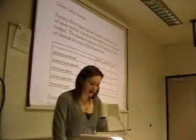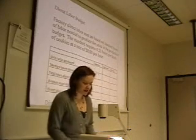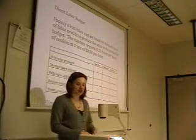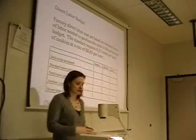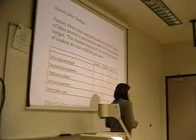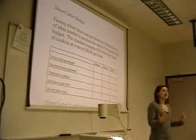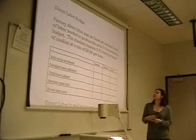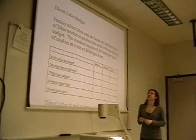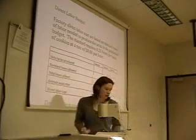What are our rules on labor? Factory direct labor costs are based on standardized hours of labor needed to produce the units in the production budget. Going back to our other chapter on variances, we had the standards: it was 0.25 hours per batch of cookies at a rate of $8 per hour.